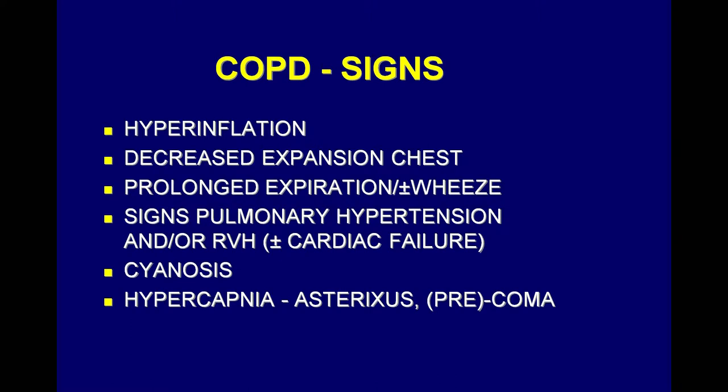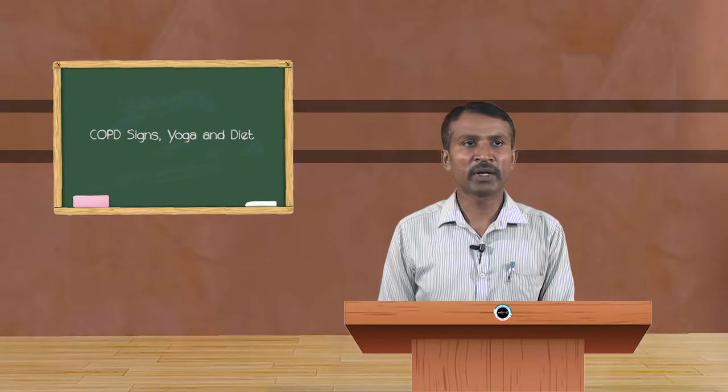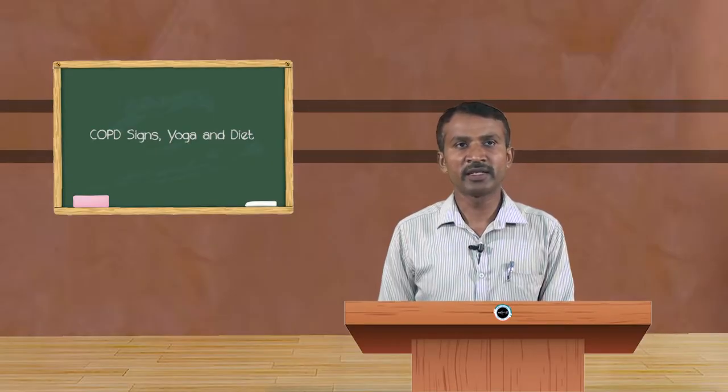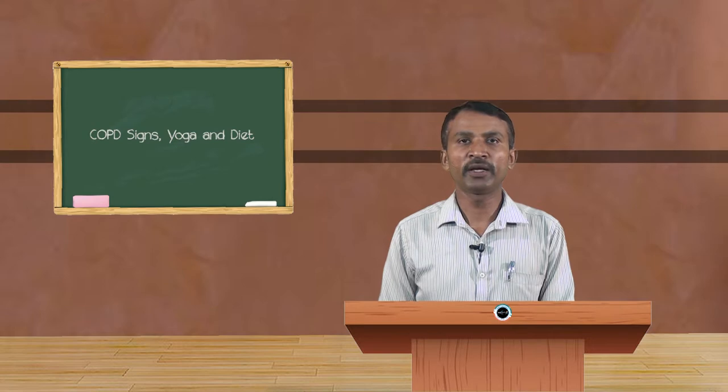Pulmonary hypertension signs include right ventricular hypertrophy, and there may also be signs of cardiac failure, cyanosis, hypercapnia, and asterixis or pre-coma.